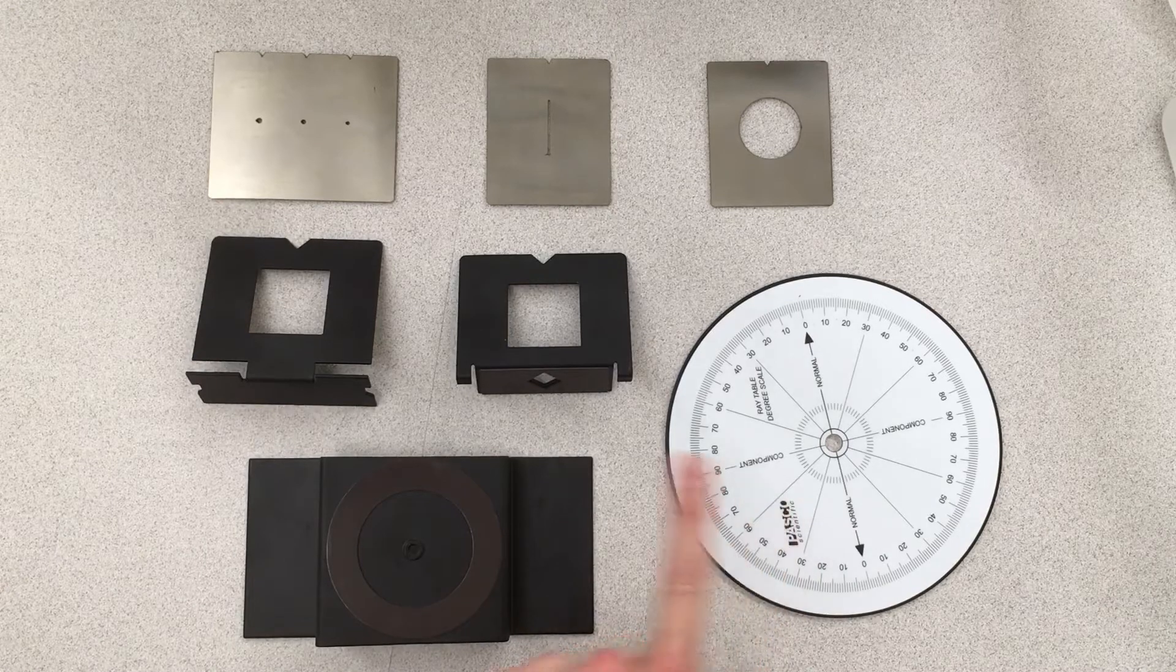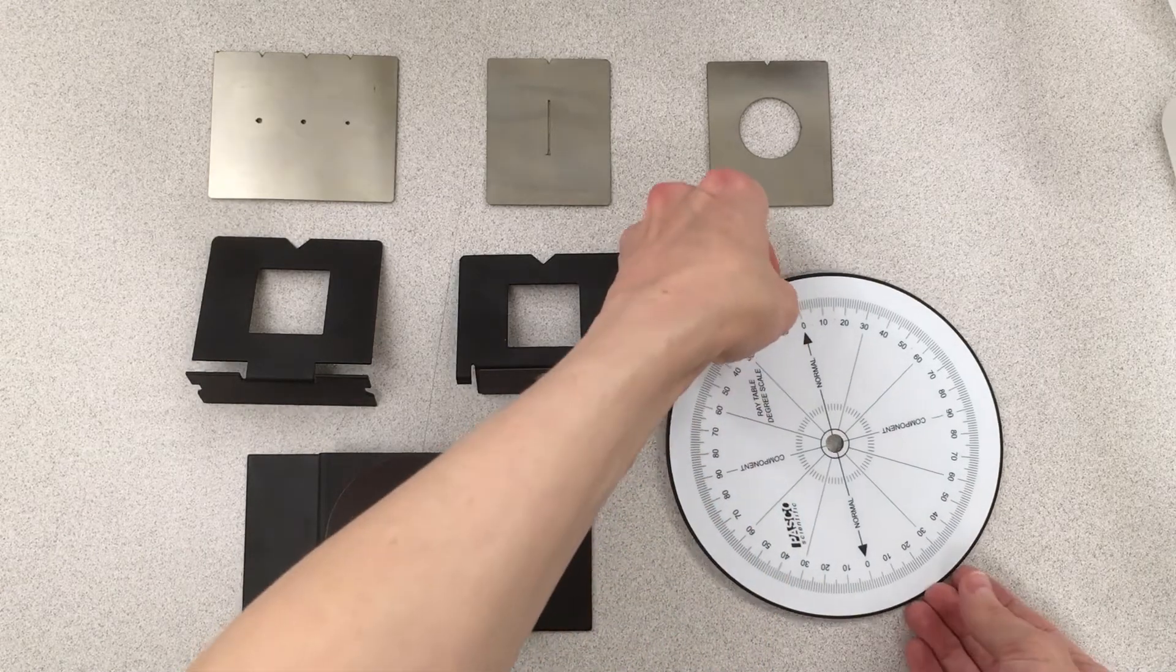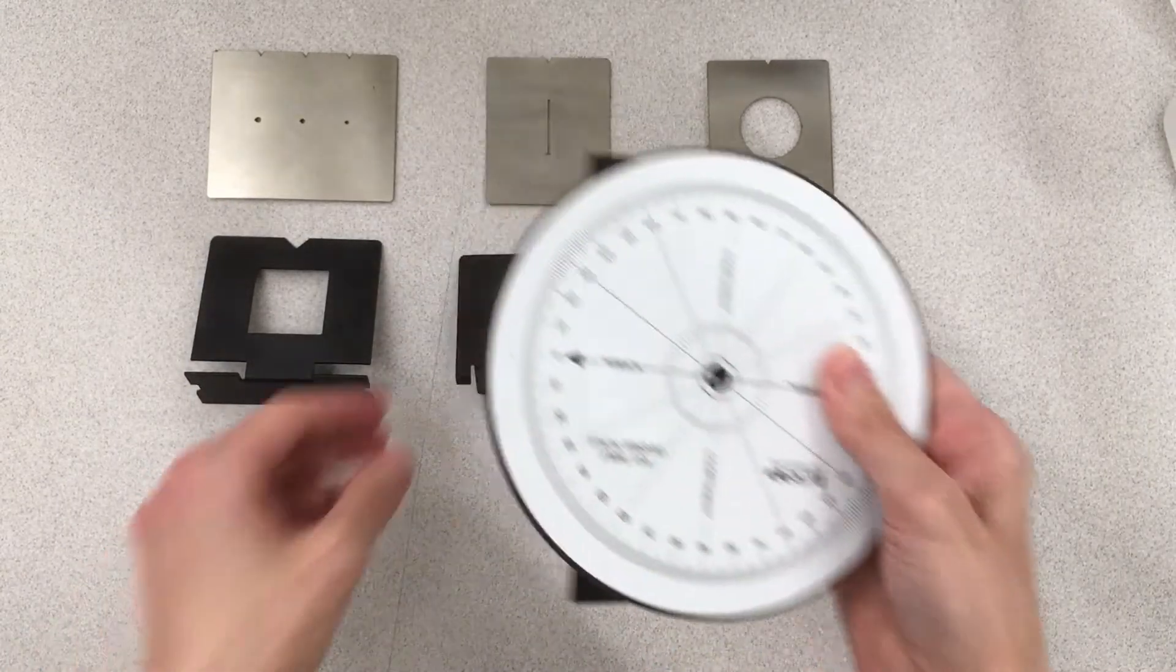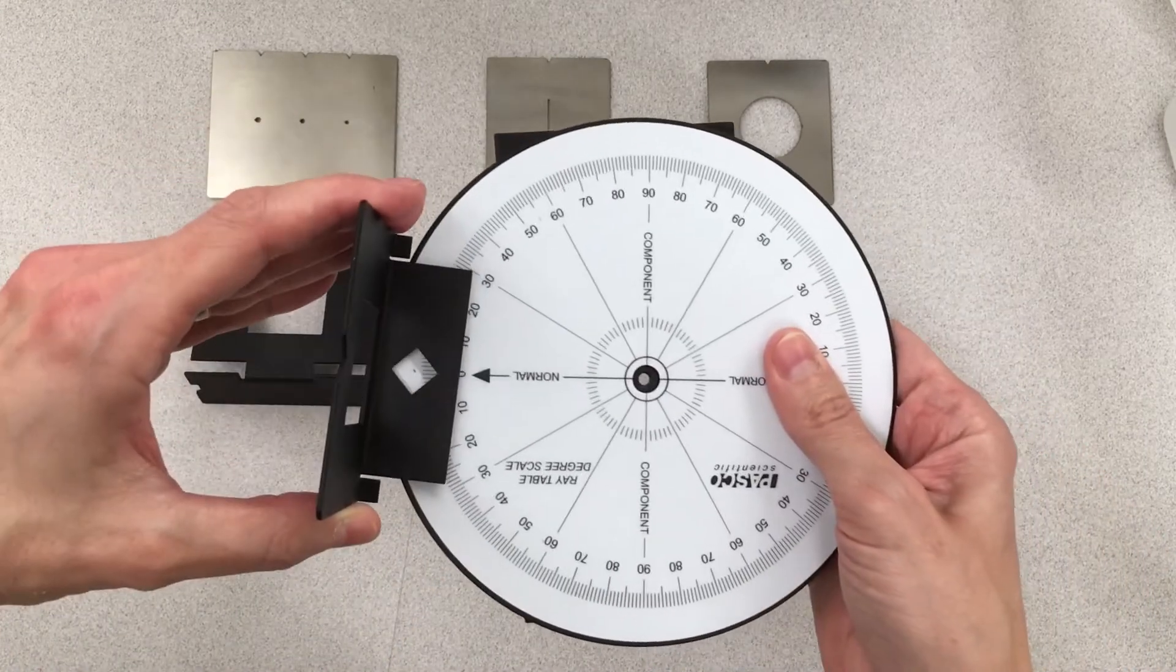This is the rotating base and its platform. The rotating base simply sits on top of the platform, and its component holder slides on top.